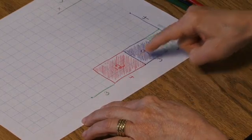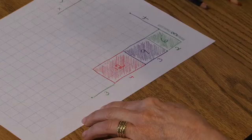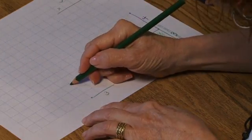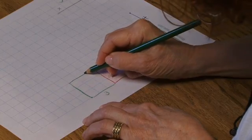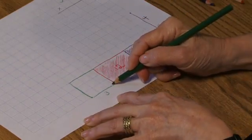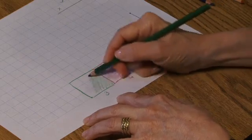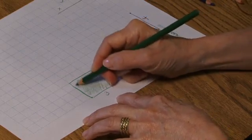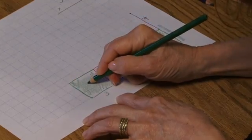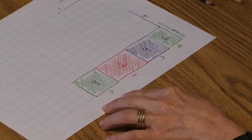3 thousands taken 3 times. Again, 3 taken 3 times equals 9. 9 represents thousands, units of thousands. So I'm coloring this section of the graph paper green.